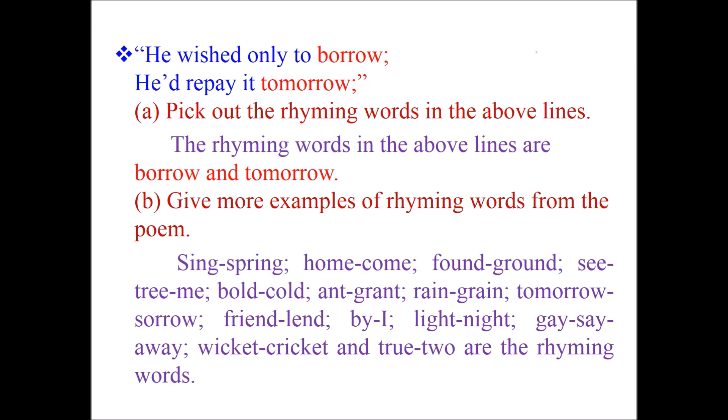Students, now look at these two lines: 'He wished only to borrow; he would repay it tomorrow.' The first question: pick out the rhyming words in the given lines. The answer is: the rhyming words are 'borrow' and 'tomorrow.' Give more examples of rhyming words from the poem: sing/spring, home/come, found/ground, see/tree/me, bold/cold, ant/grant, rain/grain, tomorrow/sorrow, friend/lend, by/I, light/night, gay/say/away, wicket/cricket, true/two.